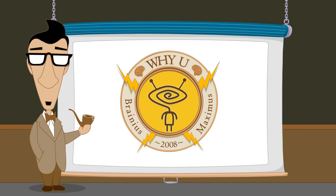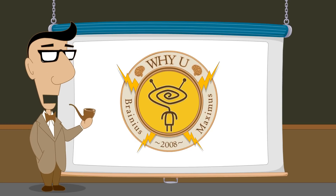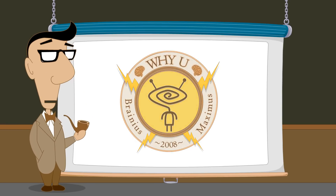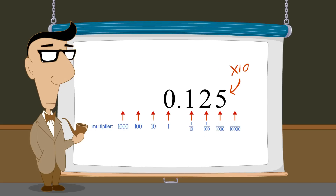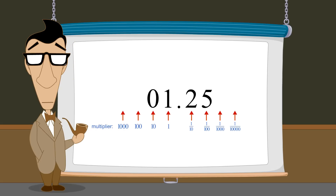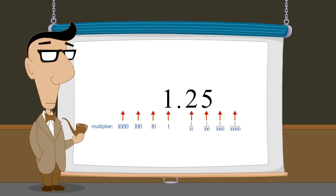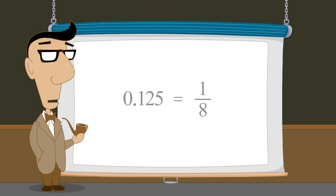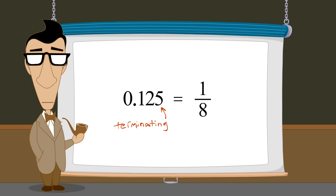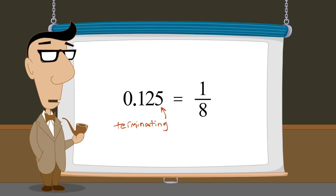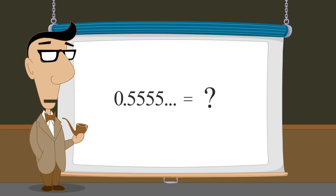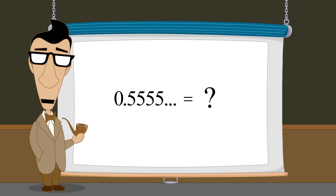Hello, I'm Professor Von Schmohawk and welcome to Why U. We have seen that multiplying any decimal number by ten shifts each digit in the number one column to the left. In the last lecture, we used this trick to convert decimal numbers with a finite number of digits into fractions. In this lecture, we will see how to convert repeating decimal numbers into fractions.